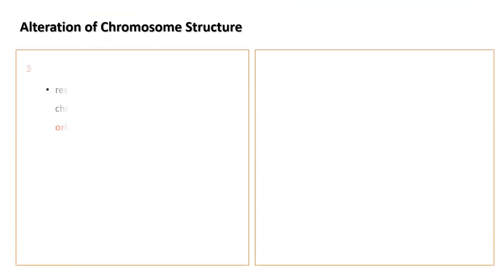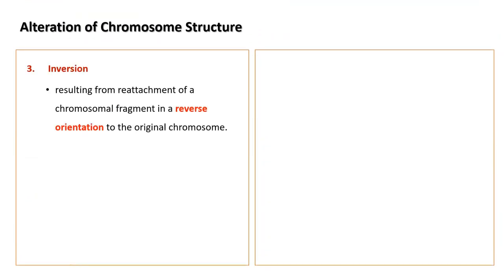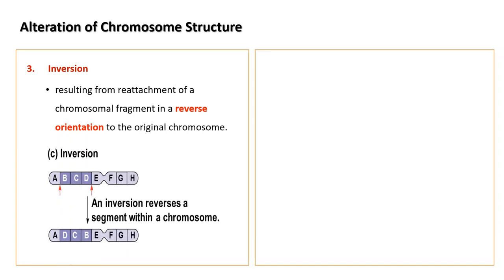The third alteration is inversion, which results from the reattachment of a chromosomal fragment in a reverse orientation to the original chromosome. For example, the sequence CBD becomes DCB after inversion.